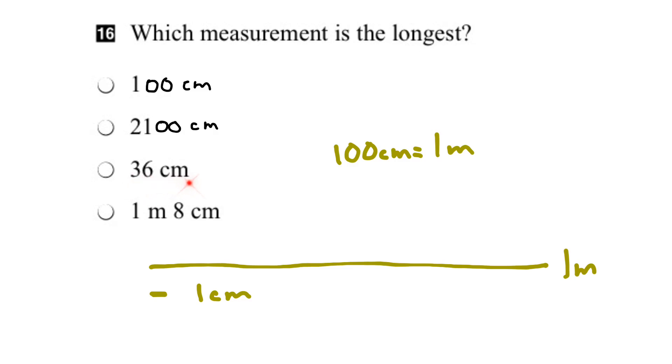So our 36 centimeters we'd leave as is because it's got the right unit here. But if we look at the next one, we have both meters and centimeters. So 1 meter would be 100 centimeters, and then additionally 8 centimeters. So the grand total here would be 108 centimeters.